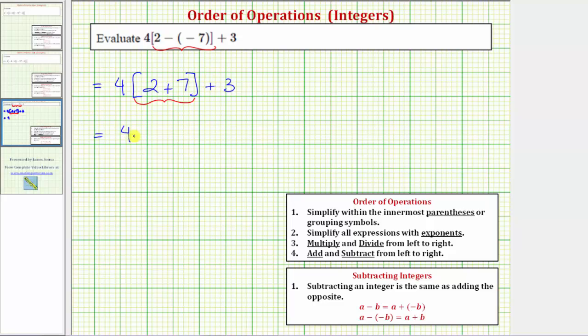So the expression is equal to four times nine plus three. Notice here we have multiplication as well as addition. So looking at the order of operations, we can skip step two because we don't have any exponents.